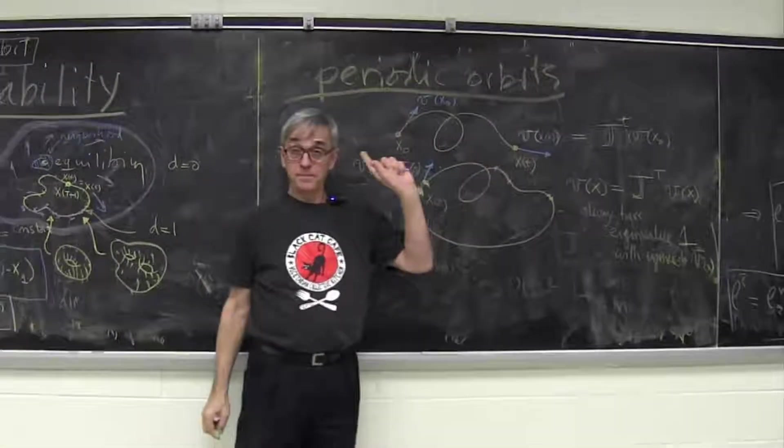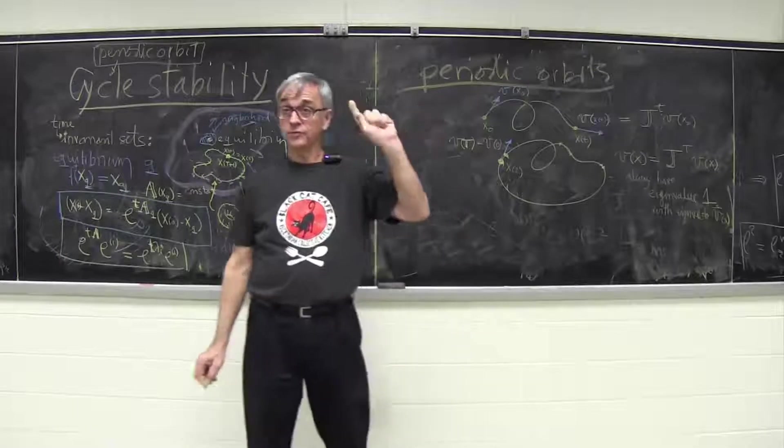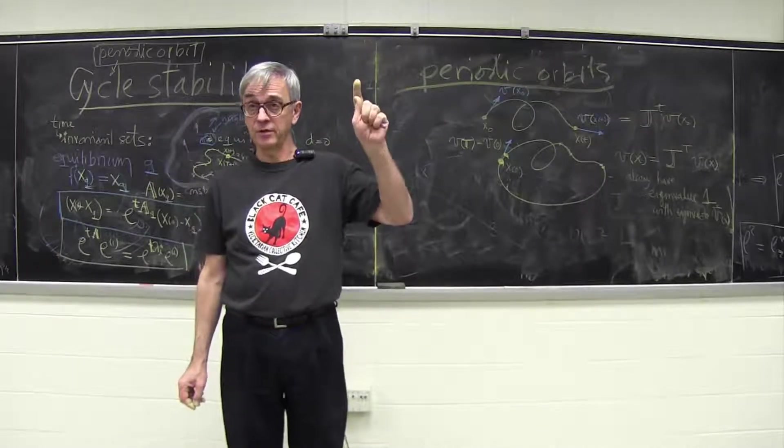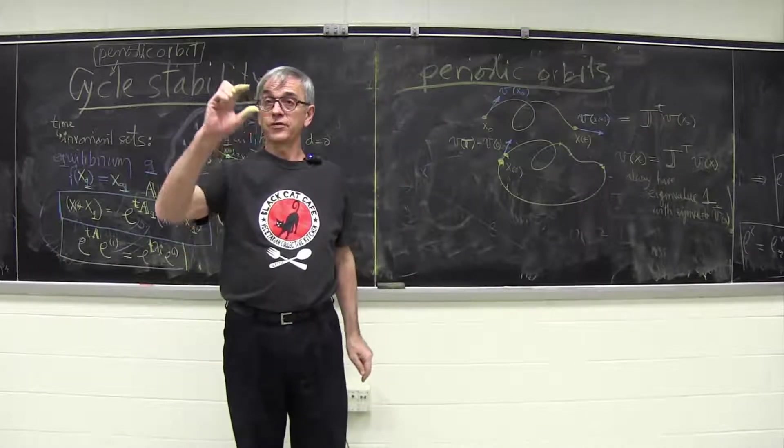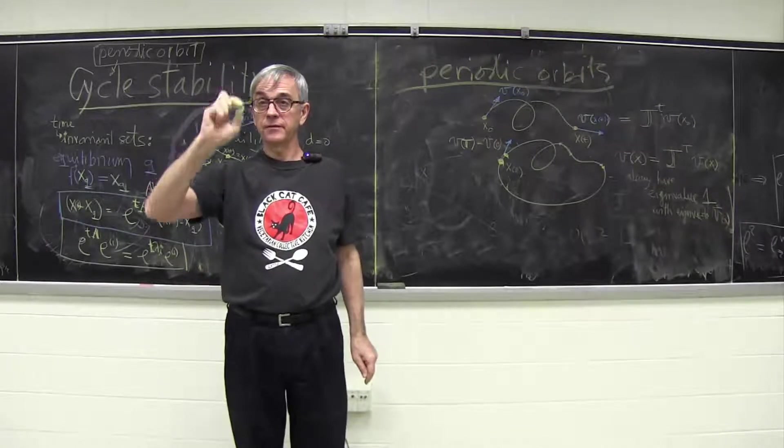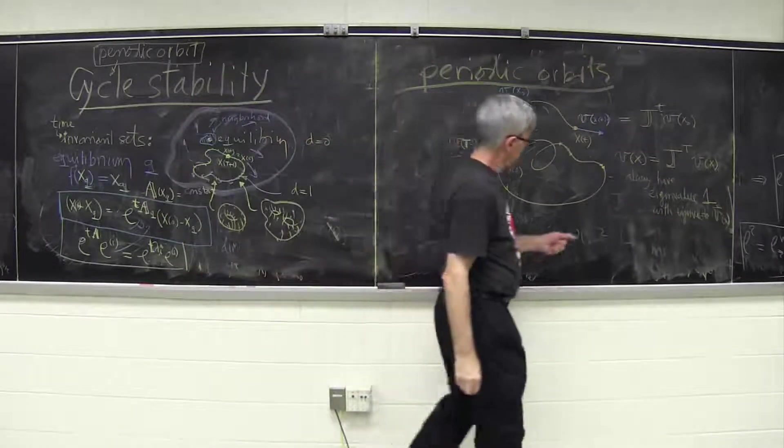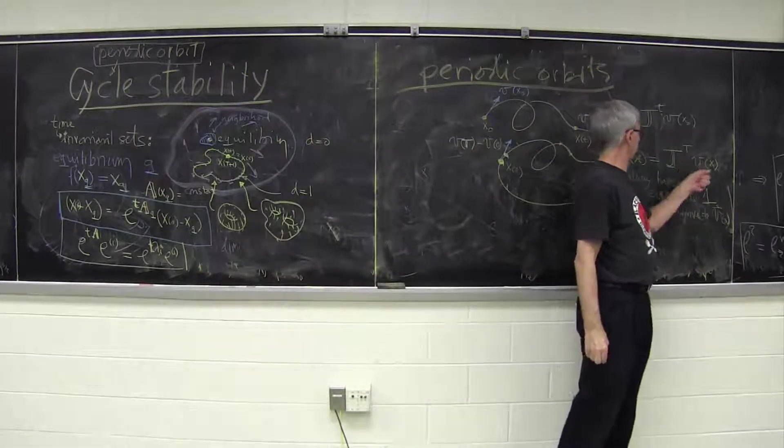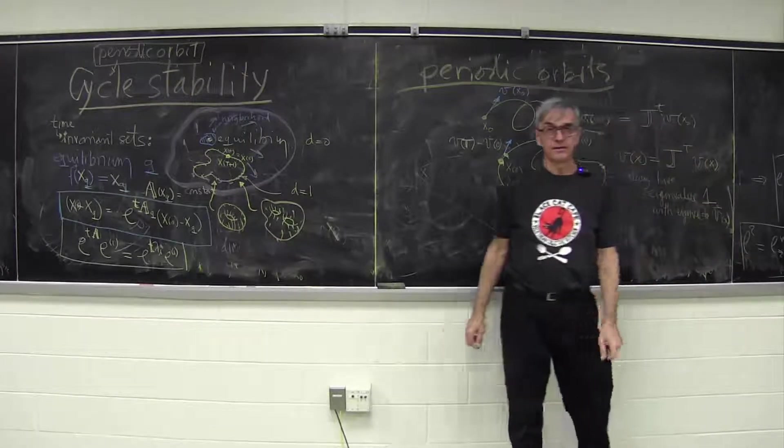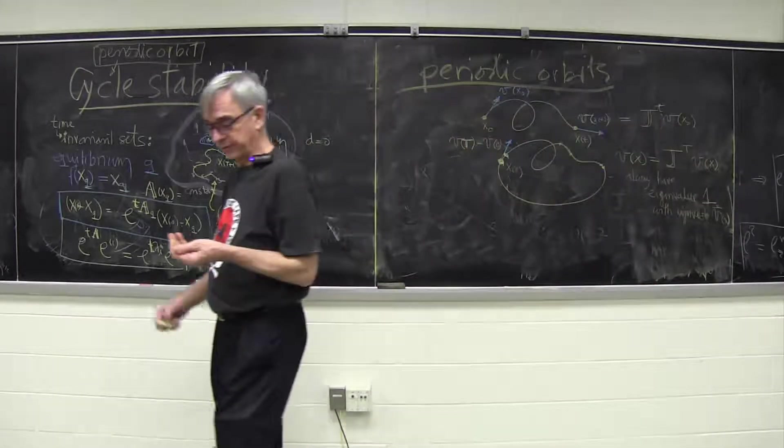So along the flow for a periodic orbit, not for a general trajectory, only for periodic orbit, there is no shearing at all. Intervals have exactly the same size, and these eigenvalues are telling you what the shearing is, so there is always eigenvalue one for periodic orbit.